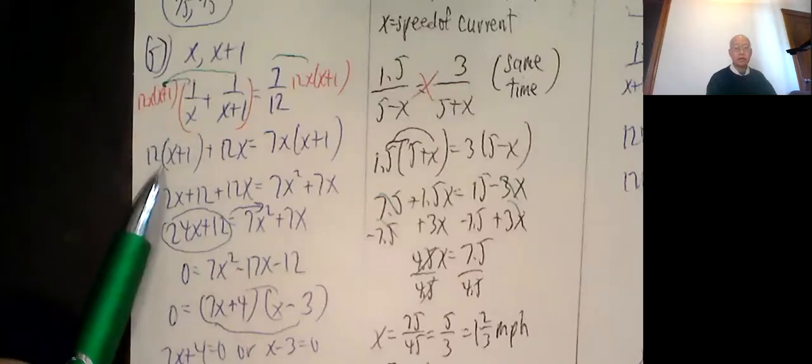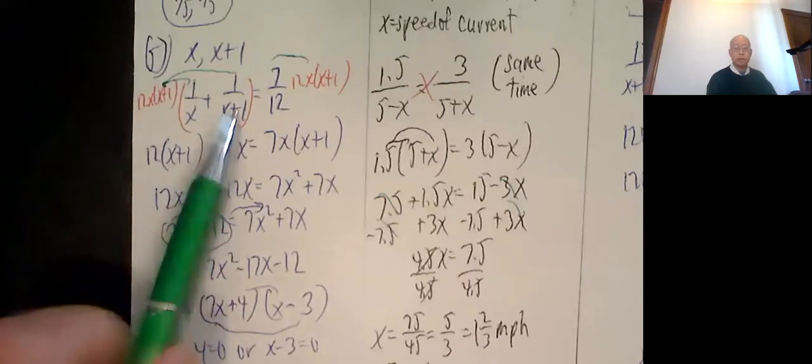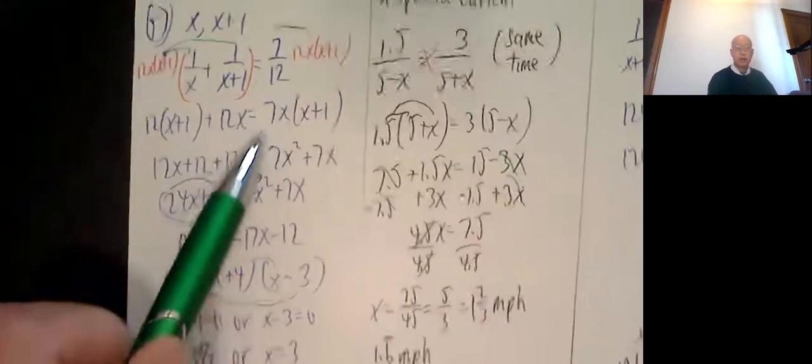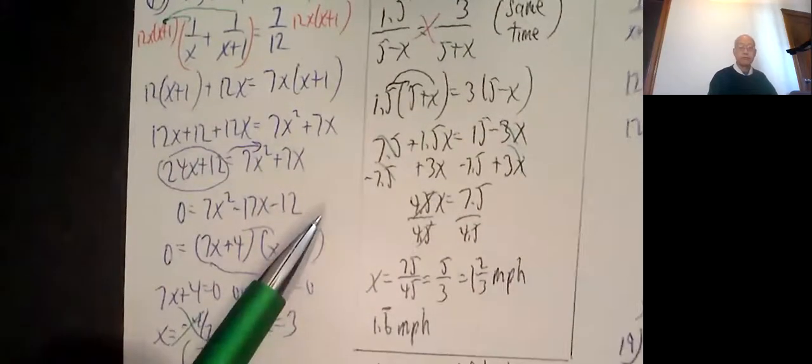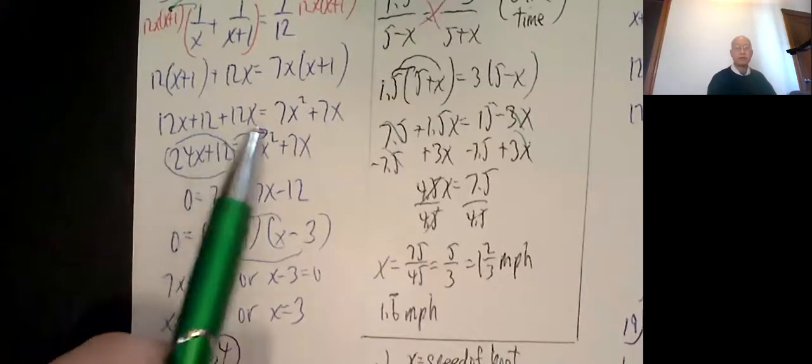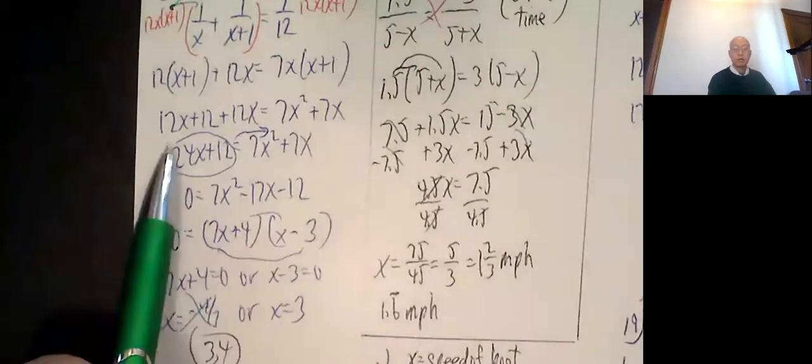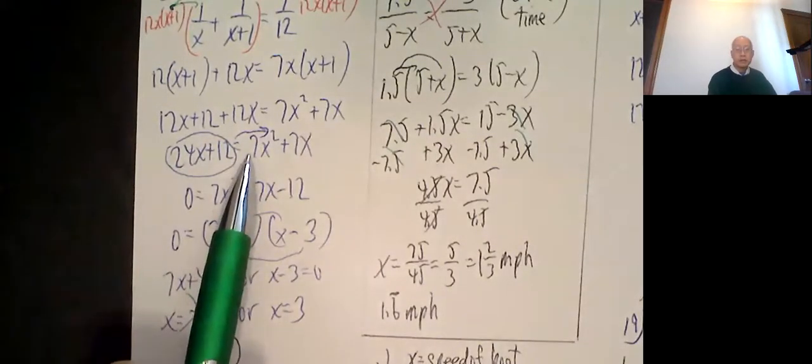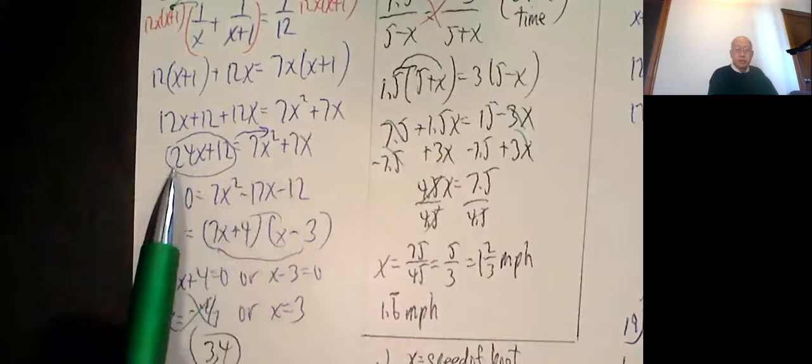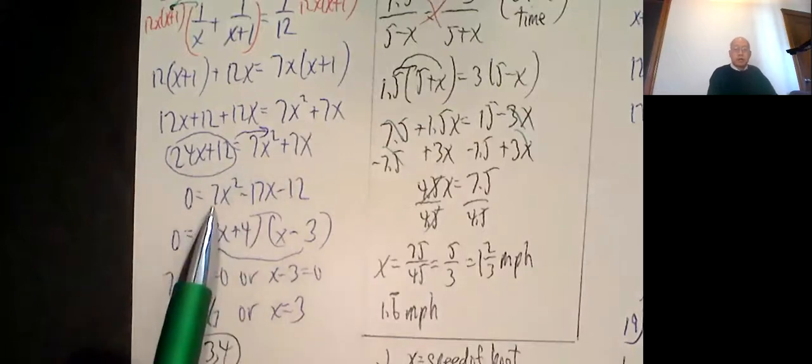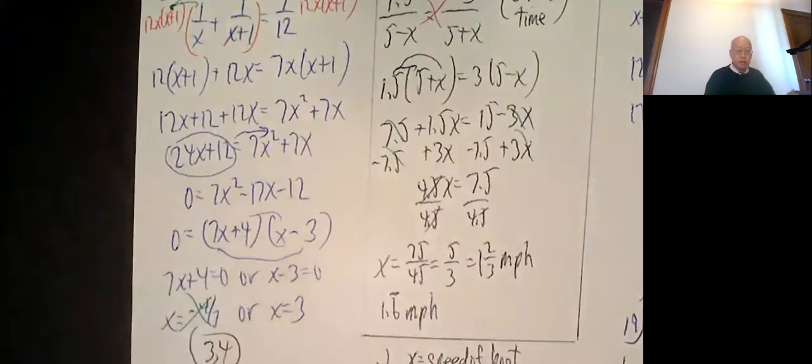Multiply by the common denominator 12x(x plus 1). So here, x cancels out, 12 times x plus 1. x plus 1 cancels out, 12x. 12 cancels out, 7x times x plus 1. Distribute: 12x plus 12 plus 12x equals 7x squared plus 7x. Combine like terms: 24x plus 12 equals 7x squared plus 7x. Subtract 24x on both sides, subtract 12 on both sides. 0 equals 7x squared minus 17x minus 12.